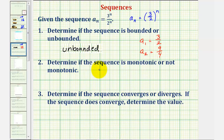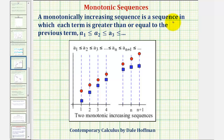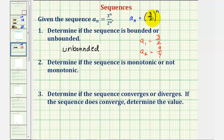Now we're going to determine if the sequence is monotonic or not monotonic — meaning, is it always increasing or always decreasing? A monotonically increasing sequence is one in which each term is greater than or equal to the previous term. We should recognize that our sequence is monotonically increasing, because we have a geometric sequence where r is greater than one, and therefore we do have a monotonic sequence.